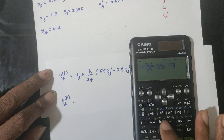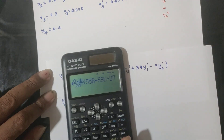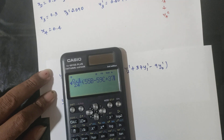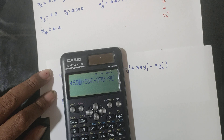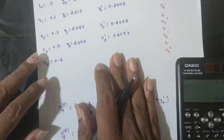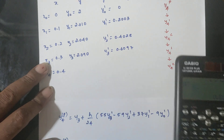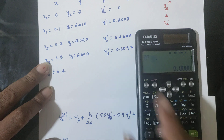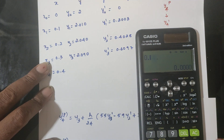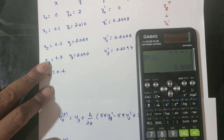Substituting into the predictor: A = y3 = 2.090, B = y3' = 0.6097, C = y2' = 0.4028, D = y1' = 0.2003, E = y0' = 0. Result: Y4P = 2.1616.